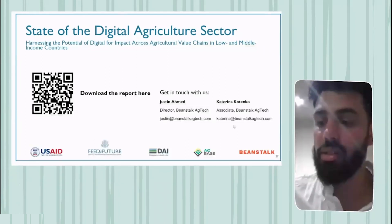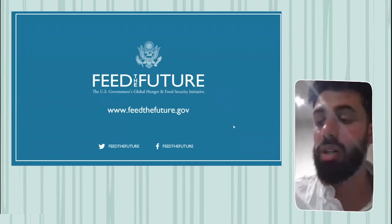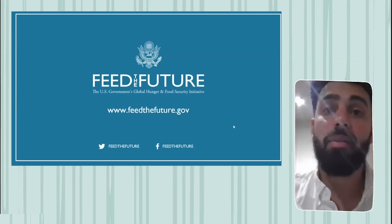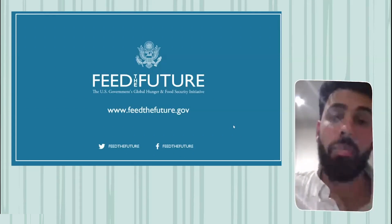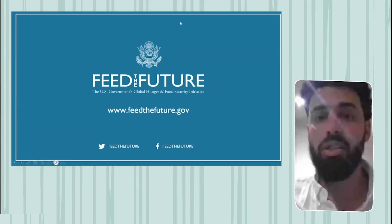I'll now hand over to Josh Woodard, Senior Digital Advisor of the Bureau of Resilience, Environment, and Food Security at USAID, to share his reflections. As we've just heard from the Beanstalk team, there is a potential for D4Ag to unlock almost 500 billion dollars over the next 10 years in LMICs, and to cut the gender gap in half. But reaching that thriving scenario is not a given — it's going to require each of us to do our part to realize these gains, in line with the recommendations laid out in the report.